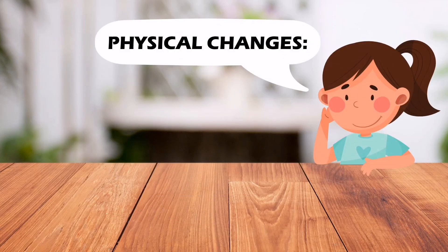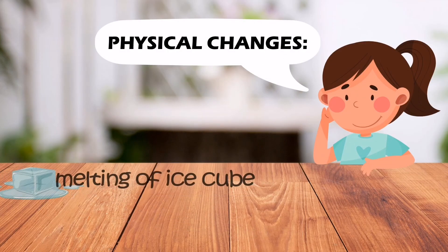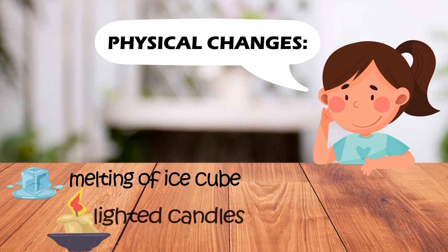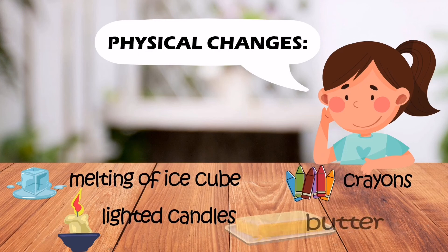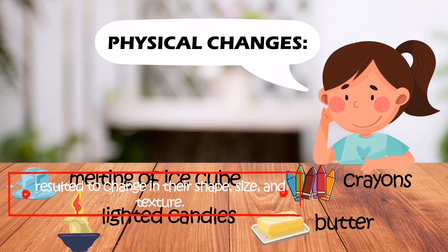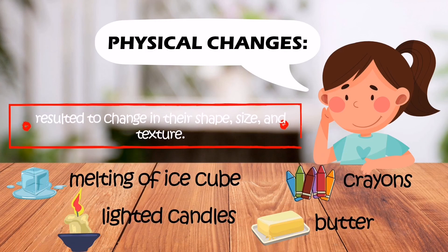Physical changes — like the melting of ice cubes, lighted candles, crayons, and butter — result in changes in their shape, size, and texture, but no new materials are formed. When cooled, these materials recover their original physical state.